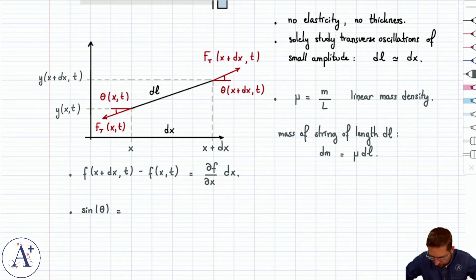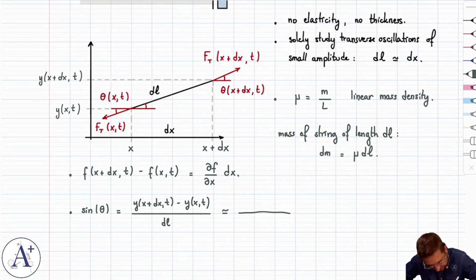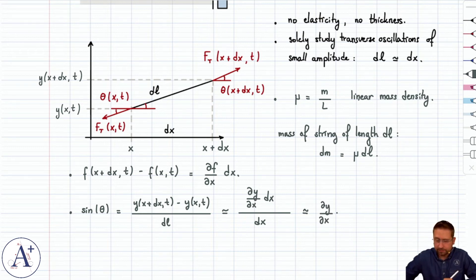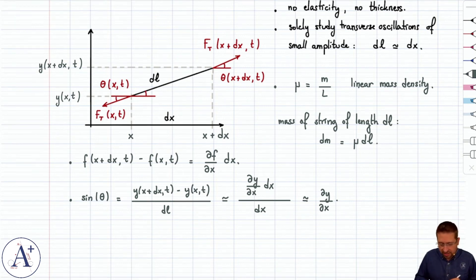As an application of that, sine of theta, if you consider the right triangle here, it's opposite over hypotenuse. Now opposite side is the change in height, so it's y of x plus dx, t minus y of x and t, divided by dL. Now dL is approximately dx, and we'll see that it simplifies with the numerator, because the numerator truly is ∂y/∂x dx, meaning that sine of theta is approximately ∂y/∂x. That's in preparation for the actual derivation.